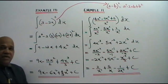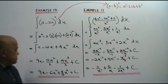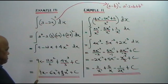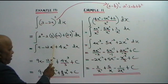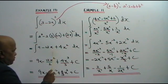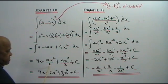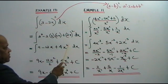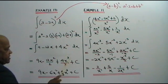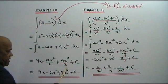9 becomes 9x. For 12x, power 1, 1 plus 1 is 2, and then you bring down the 2 here. Plus 4x to the power of 2 plus 1, which is 3, and then you bring the 3 down here. Plus C.